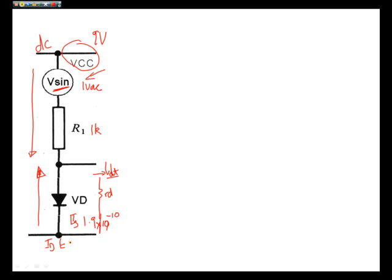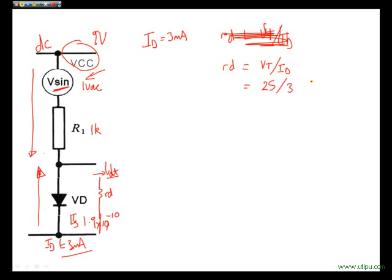And we were given a diode current ID was equal to 3 milliamps. So if we start off from the basics, we know ID 3 milliamps. We can easily calculate RD which is equal to VT divided by ID. I'll just write that out again. RD is equal to VT divided by ID. In which case that's 25 millivolts divided by 3 milliamps, which equals 8.3 ohms. Quite straightforward.